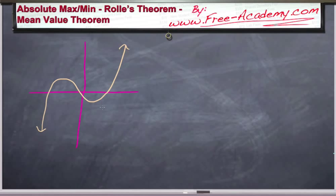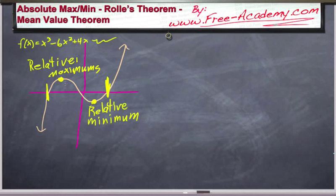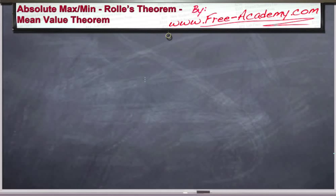The last example in this absolute max and min section involves an equation on the order of f(x) = x³ − 6x² + 4x. We have a maximum and a minimum in this function, but they're not absolute on negative infinity to positive infinity because the graph goes to positive and negative infinity. These are called relative maximum and relative minimum. If you cut the interval, instead of going from negative infinity to positive infinity, then these would become absolute maximums and minimums. Pay attention to the borders, as that becomes important in applications.